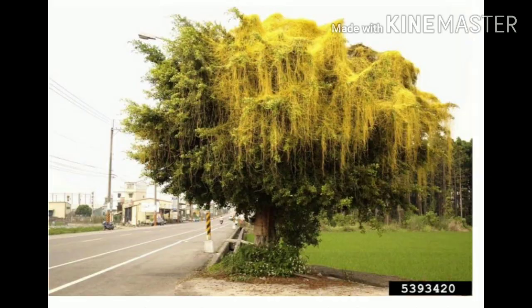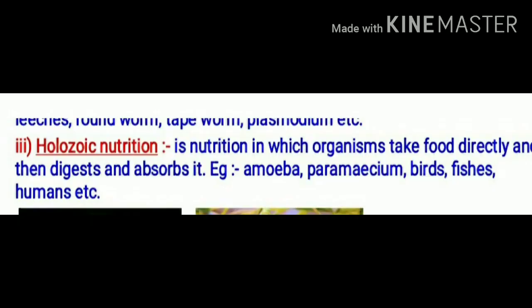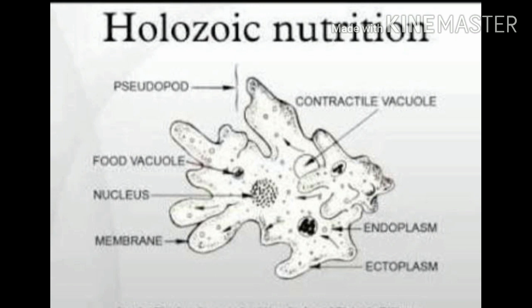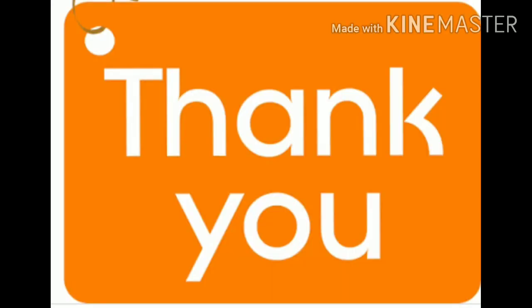Then comes the holozoic mode of nutrition. It is the nutrition in which organisms take food directly — they engulf the food and then digest and absorb it inside the body. For example, human beings, amoeba, paramecium, birds, and fishes all engulf food, take it inside the body, and inside the body the food undergoes digestion and is further absorbed. In my next video, we will discuss nutrition in plants in detail. Till then, enjoy learning.